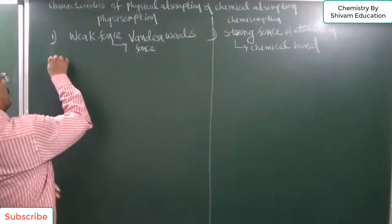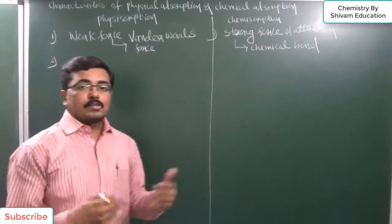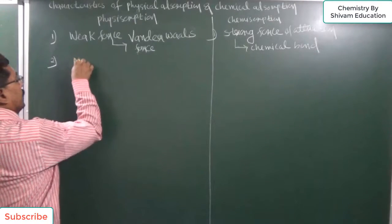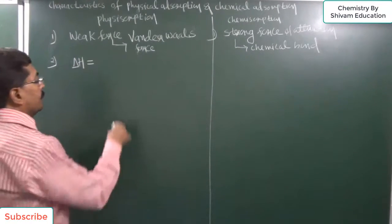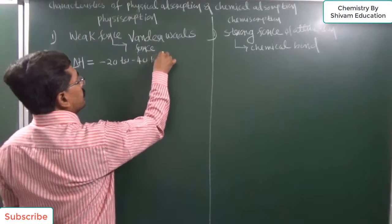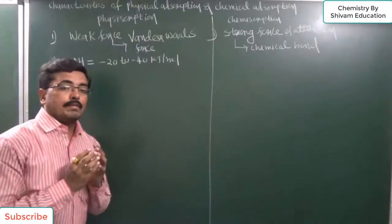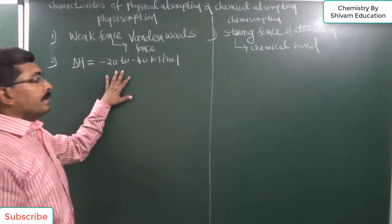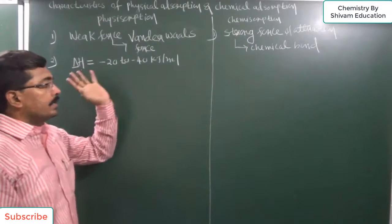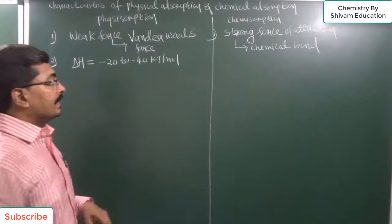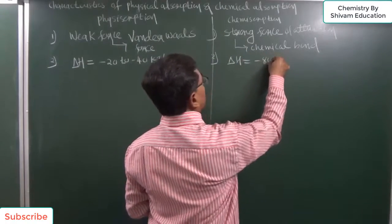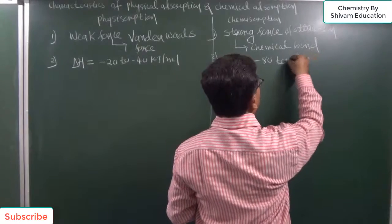Adsorption phenomena is an exothermic reaction, so heat will be liberated. The enthalpy change in physical adsorption is comparatively less — minus 20 to minus 40 kJ per mole. While in chemical adsorption, enthalpy change will be comparatively high, in the range of 80 to 240 kJ per mole.